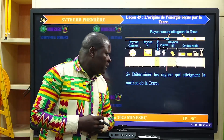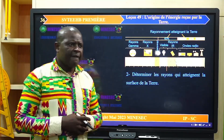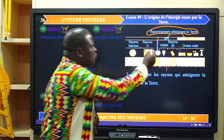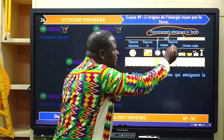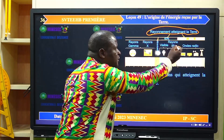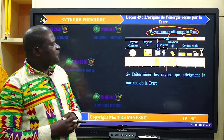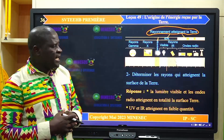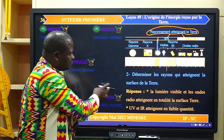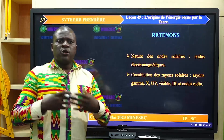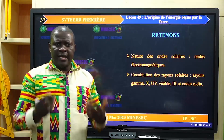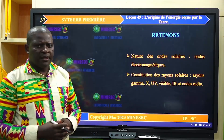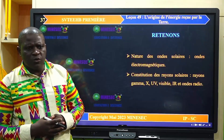Déterminons les rayons qui atteignent la surface de la Terre. À partir du document, nous pouvons relever le rayonnement atteignant la Terre : nous avons un peu d'ultraviolet, toute la lumière visible, un peu de rayonnement infrarouge et toutes les ondes radio parviennent à la surface de la Terre. On peut donc retenir que le rayonnement solaire est un rayonnement d'ondes électromagnétiques composé de six types d'ondes : les rayons gamma, les rayons X, les ultraviolets, le visible, l'infrarouge et les ondes radio.